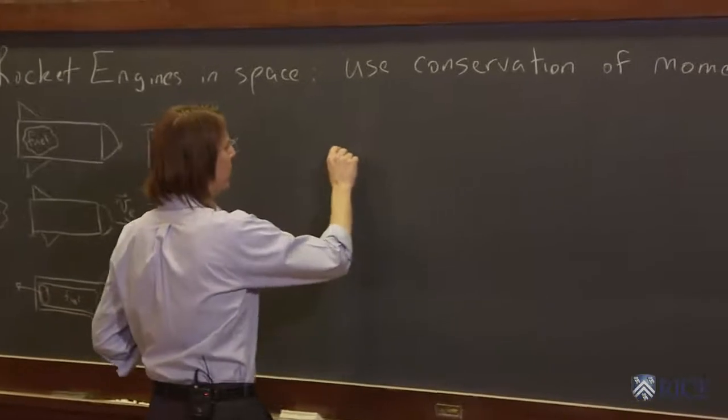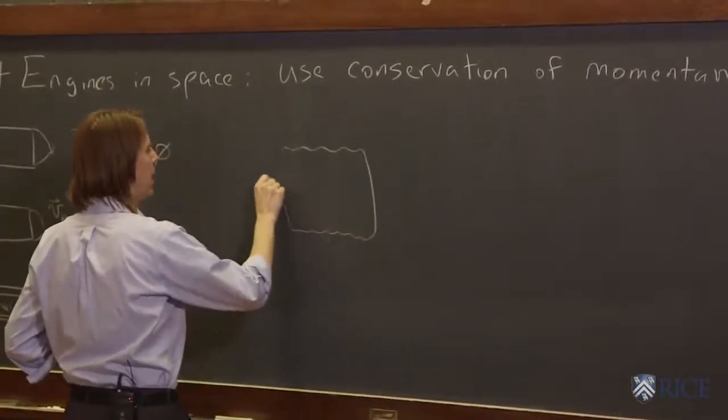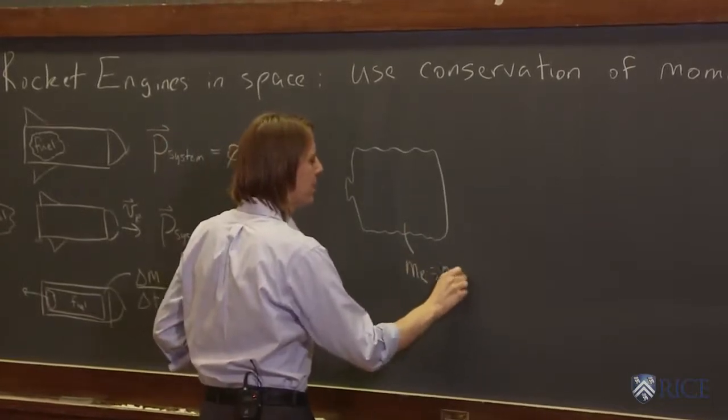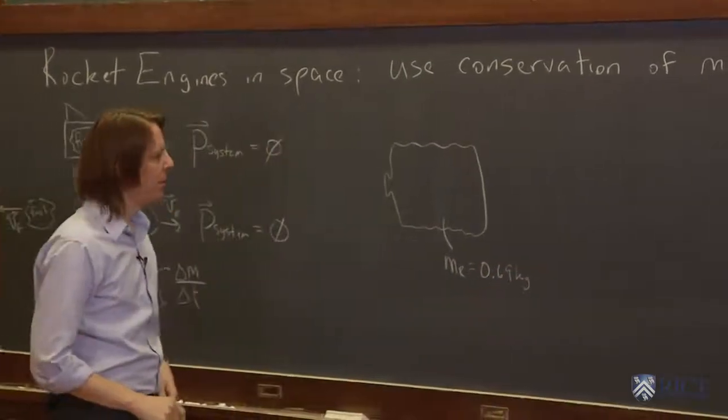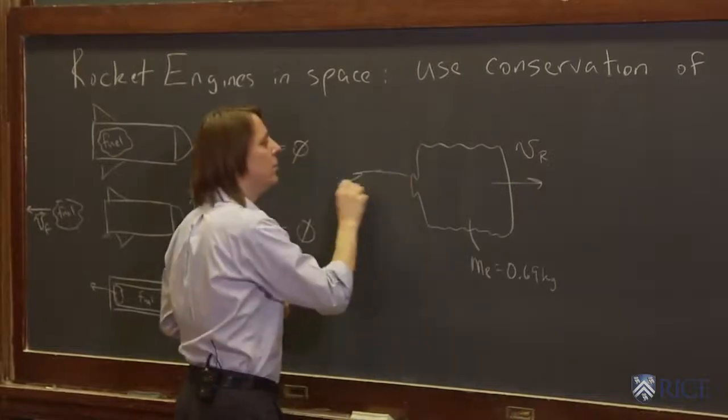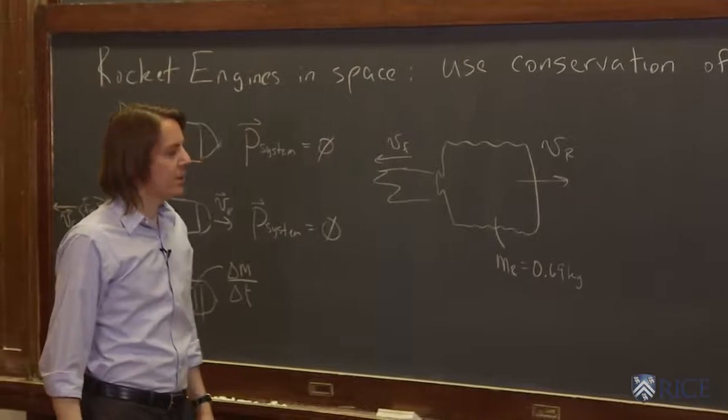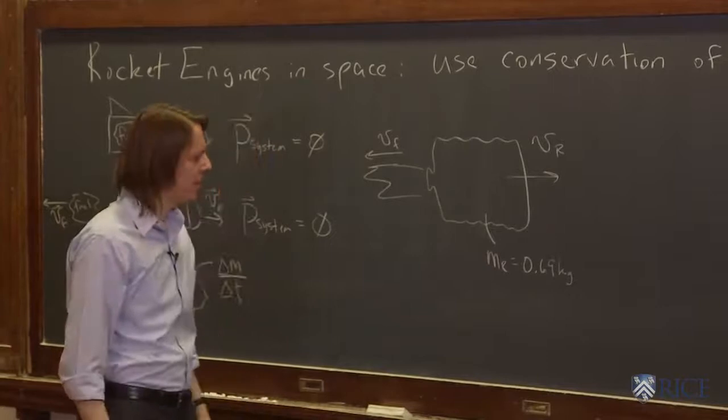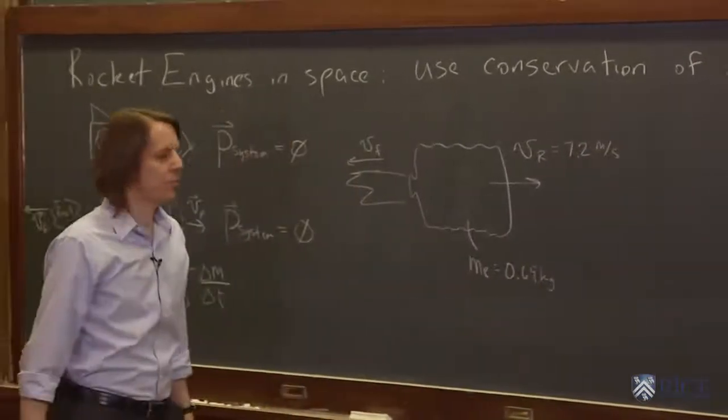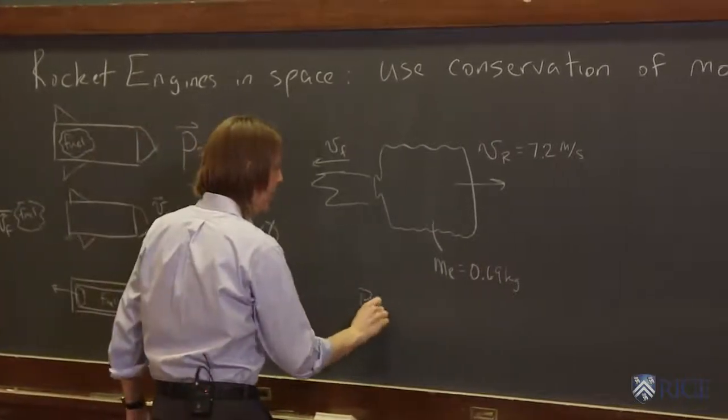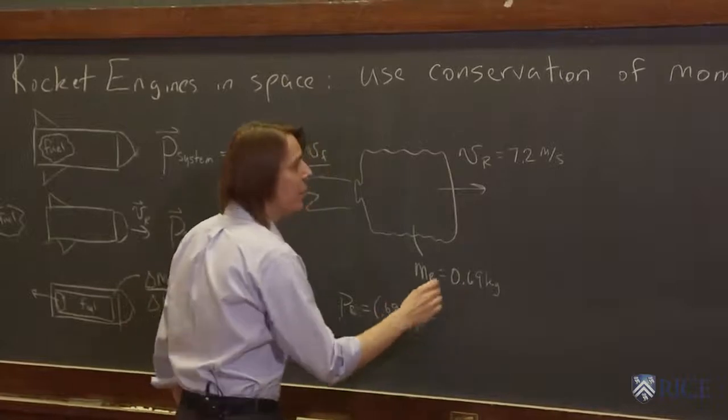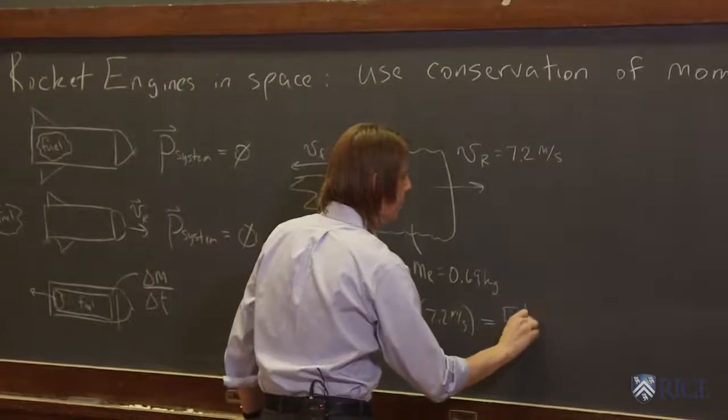So let's just analyze our rocket a little bit. It was a water bottle and it had a nozzle. The mass of the rocket is about 0.69 kilograms. At first the momentum was zero, but then after we lit it, the rocket goes this way with some velocity Vr and the fuel goes this way with some velocity Vf. I analyzed the video and measured V rocket to be about 7.2 meters per second. The final momentum of the rocket is 0.69 kilograms times 7.2 meters per second, which is about 5 kilogram meters per second.